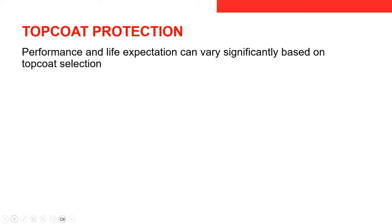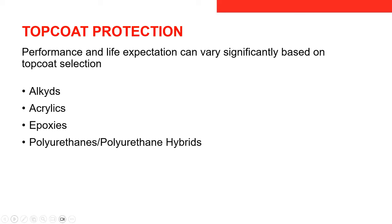Performance and life expectation can vary significantly based on top coat selection. Some technologies on the market include alkyd top coats, acrylics, epoxies, polyurethanes or polyurethane hybrids, polysiloxanes, and fluoropolymers. In sequence, alkyds will give you the lowest life expectation for color and gloss protection, while fluoropolymers give you the longest life cycles. We'll go into what that means in the following slides.